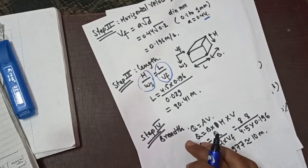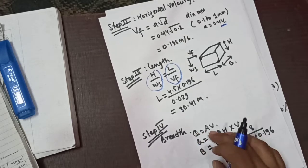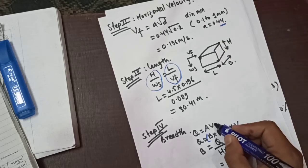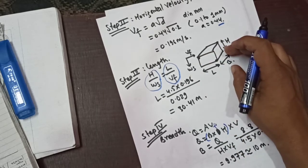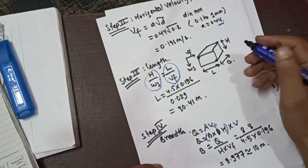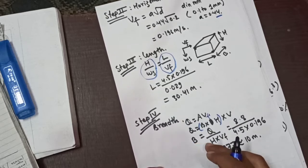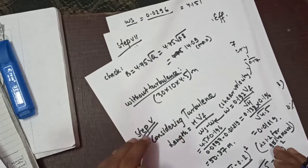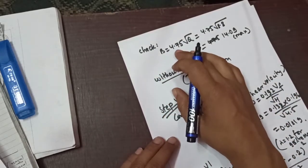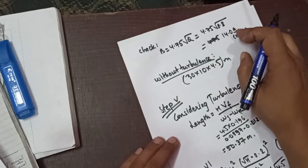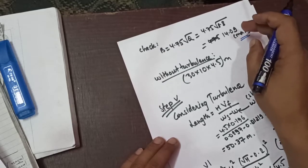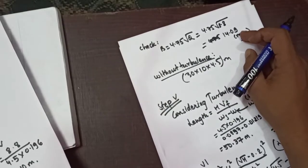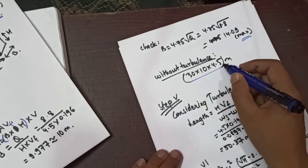Step 4: The width B is calculated. Checking using B = 4.75√Q = 4.75 × √8.8 = 14.09 m. The selected width B = 10 m is less than 14.09 m, so no turbulence issue. Final basin dimensions: Length 30 m × Width 10 m × Depth 4.5 meters.